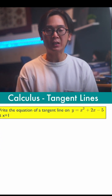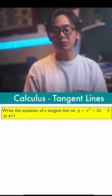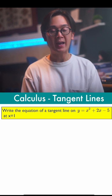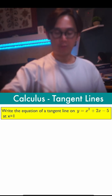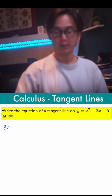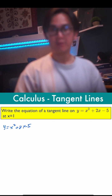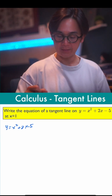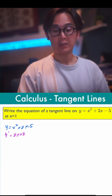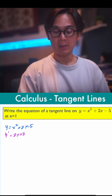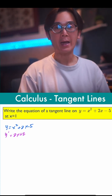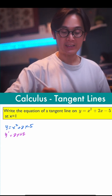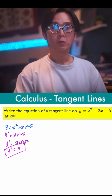Now let's try to answer a problem where we write the equation of a tangent line given the function y is equal to x squared plus 2x minus 5 at point x is equal to 1. By finding the derivative of y, we'll be able to find the equation of the slope of our tangent line, which is 2x plus 2. By substituting x equal to 1, the slope of that tangent line will be at 4.